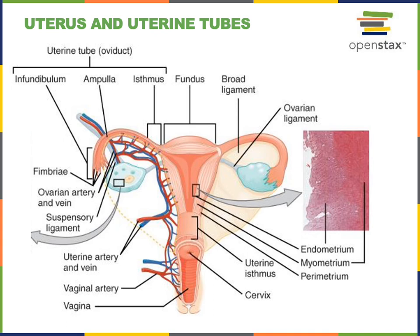The major regions of the uterus include the body, which is the large central compartment; the fundus, the superior end just above the openings of the uterine tubes; and the cervix, the inferior narrow region that connects to the vagina.